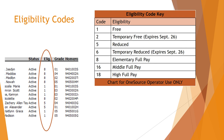When examining the list, it is helpful to understand the student's situation by using their eligibility code. One is free, two is temporary free which expires on September 26th, five is reduced, six is temporary reduced expiring September 26th, eight is elementary full pay, 16 is full pay middle school, and 18 is full pay high school.